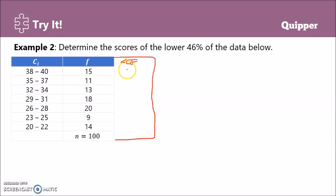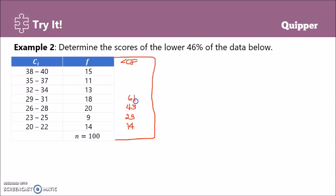It's easier to add up all the frequencies from the bottom. We start at 14, plus 9, that's 23; 23 plus 20, that's 43; 43 plus 18 is 61; 61 plus 13 is 74; 74 plus 11, that's 85; 85 plus 15, that's 100. The last less than cumulative frequency equals 100, which matches our total frequency N equals 100, so our less than cumulative frequency is correct.